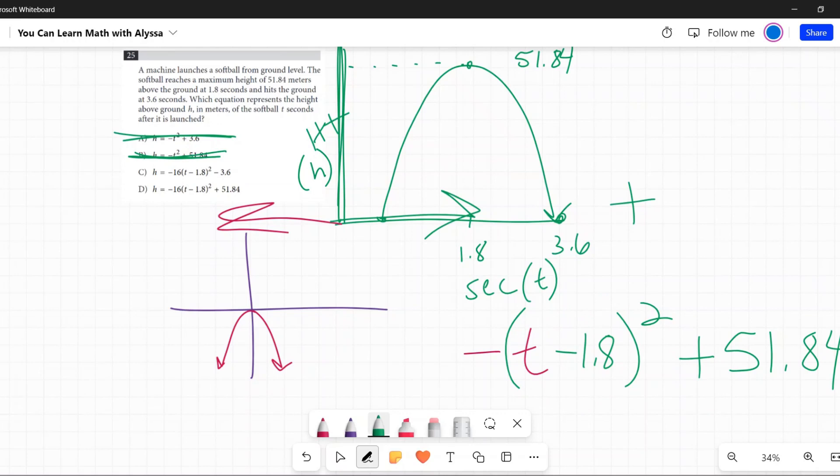Now both of these have negative 16, so I'm going to assume now that the first two I know were wrong, that negative 16 is the number out front that it should be.